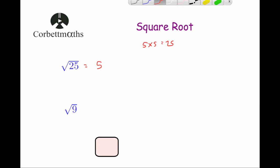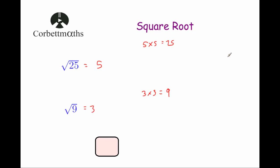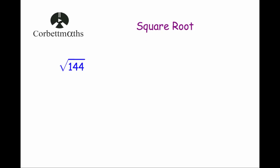Let's have a look at number one. Again we have the square root symbol, so it says the square root of 9, and that means what number will multiply by itself to give 9. Well, 3 times 3 is equal to 9, so therefore the square root of 9 is equal to 3.